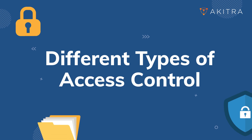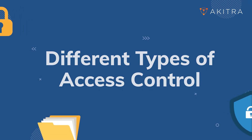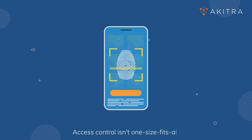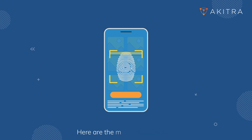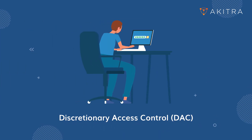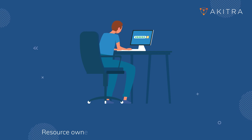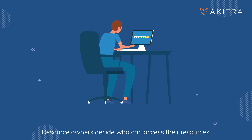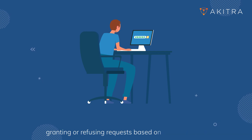Access Control isn't one-size-fits-all. Here are the most common types. First, Discretionary Access Control: resource owners decide who can access their resources, granting or refusing requests based on their discretion.